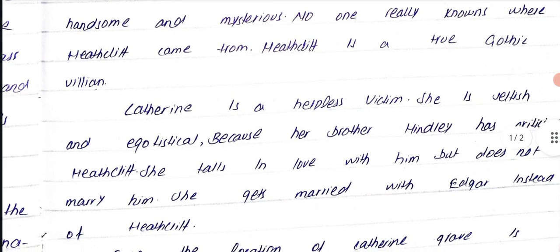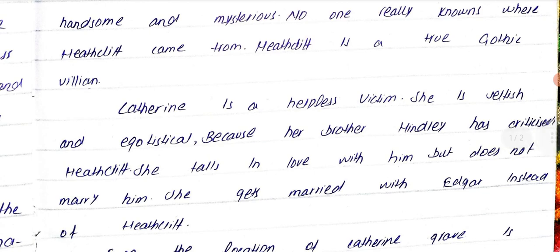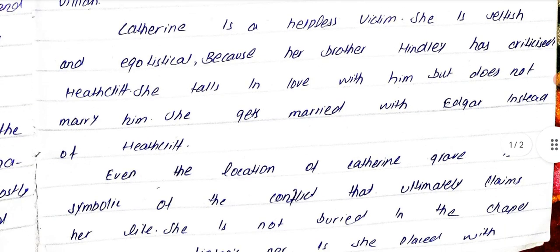Catherine is a helpless victim. She is selfish and egotistical because her brother Hindley has mistreated Heathcliff. She falls in love with him but doesn't marry him. She gets married to Edgar instead of Heathcliff due to social class considerations.